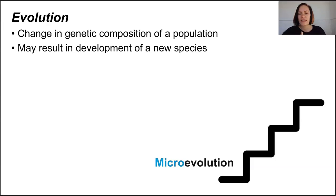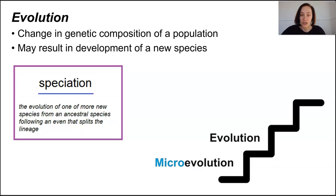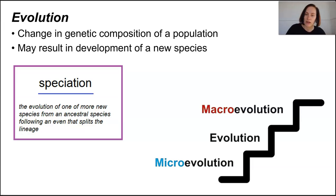Eventually, a section of a population can accrue so many changes that they've actually turned into an entirely new species, and this is known as speciation. Where speciation occurs to develop a collection of new taxonomic groups, this is known as macroevolution. So microevolutionary changes accumulate over time and eventually lead to speciation and macroevolution.